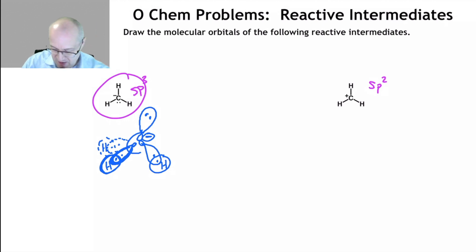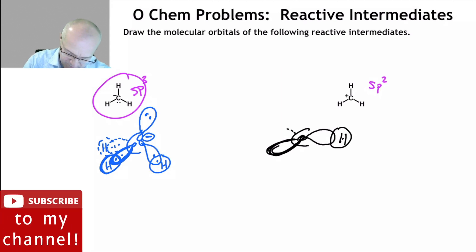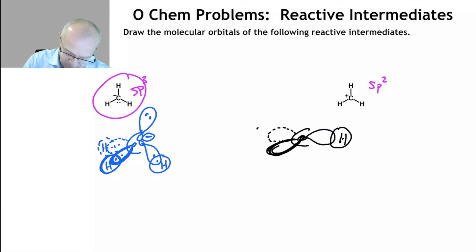So carbocations look something like this. Here is one of the sp3 orbitals. Here's the other one coming out towards us. Remember sp2 is trigonal planar, right? There you go.